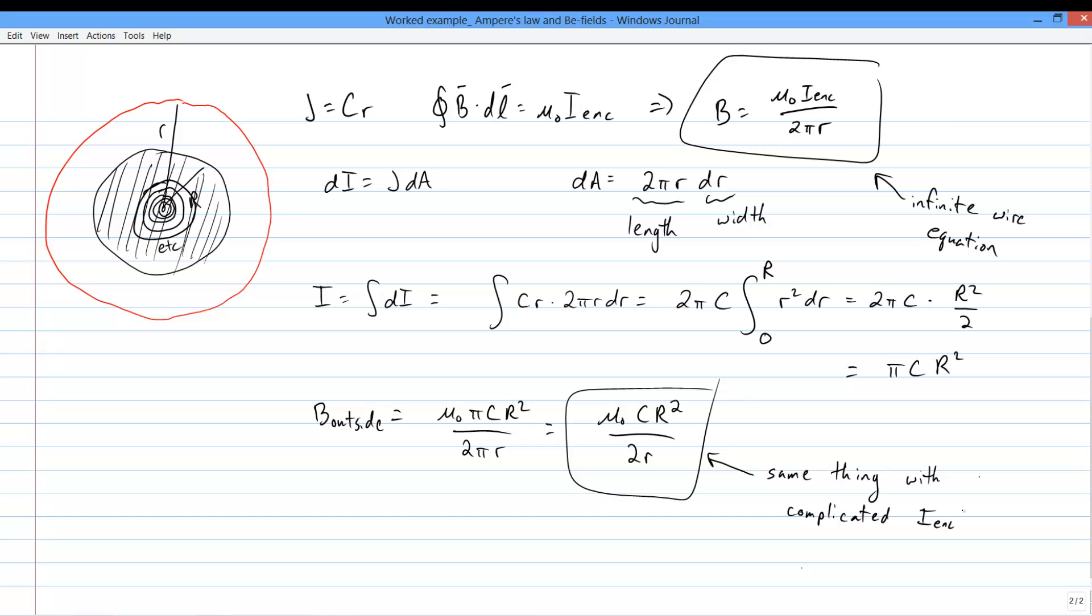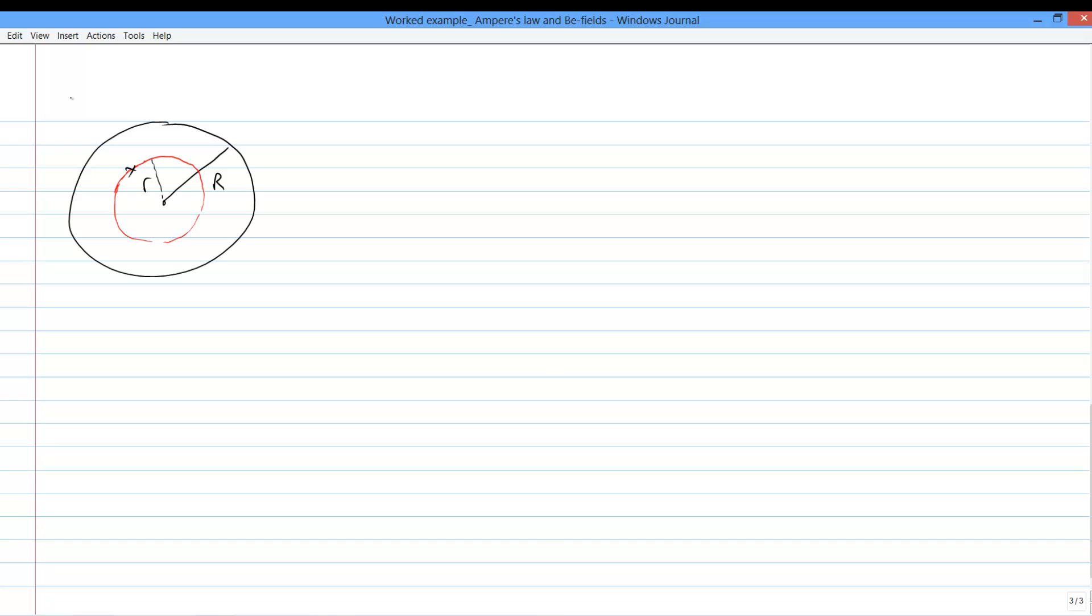Now, what if we're inside the wire? What field do we get then? Here's the same situation, but the point of interest is inside the wire, so I've drawn my Amperian loop so as to include that point.